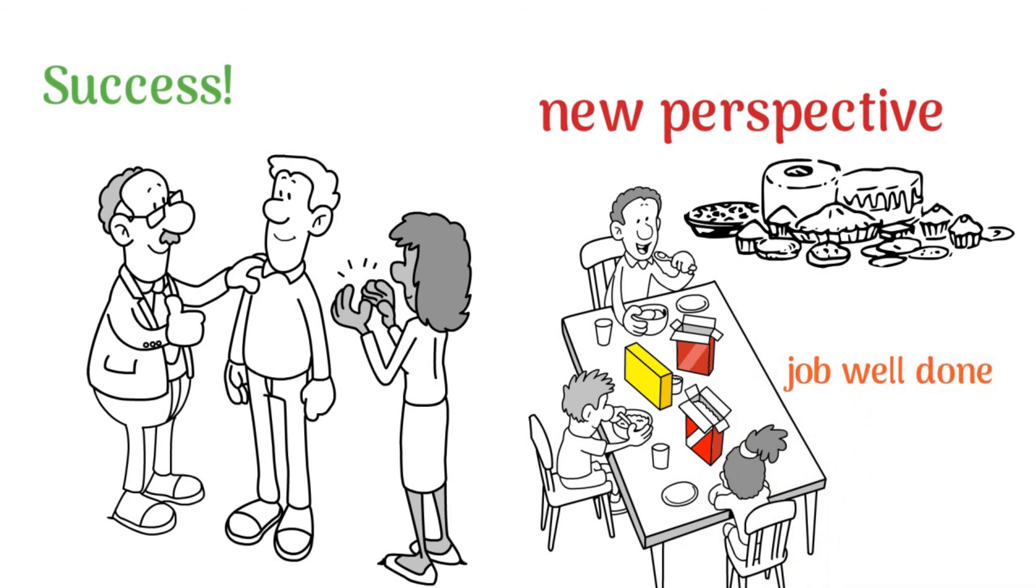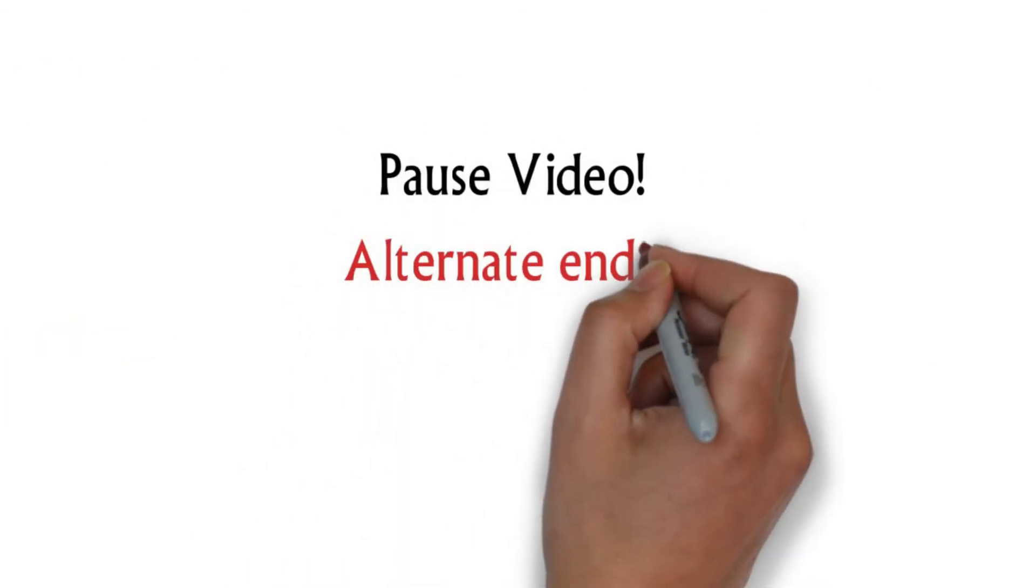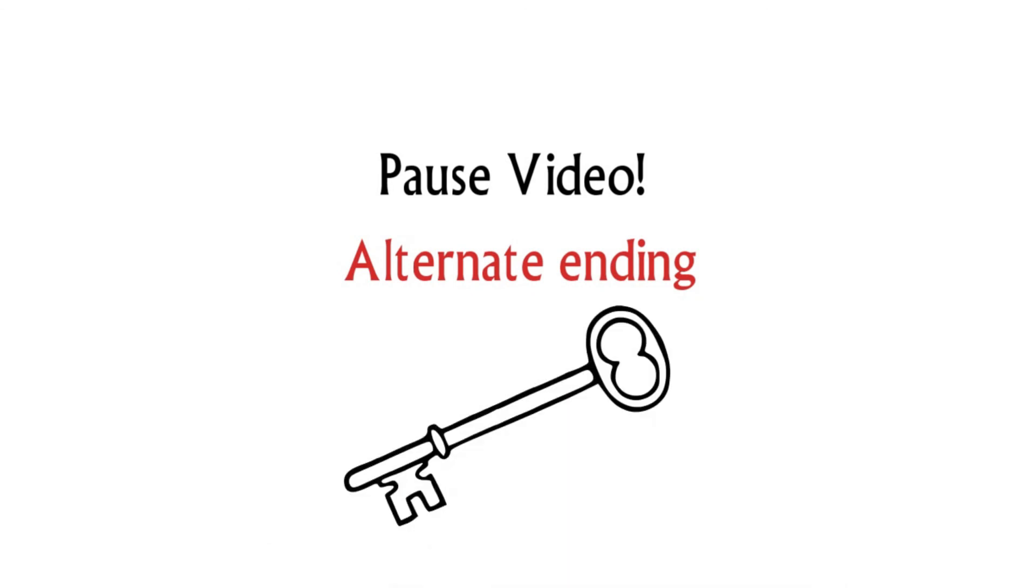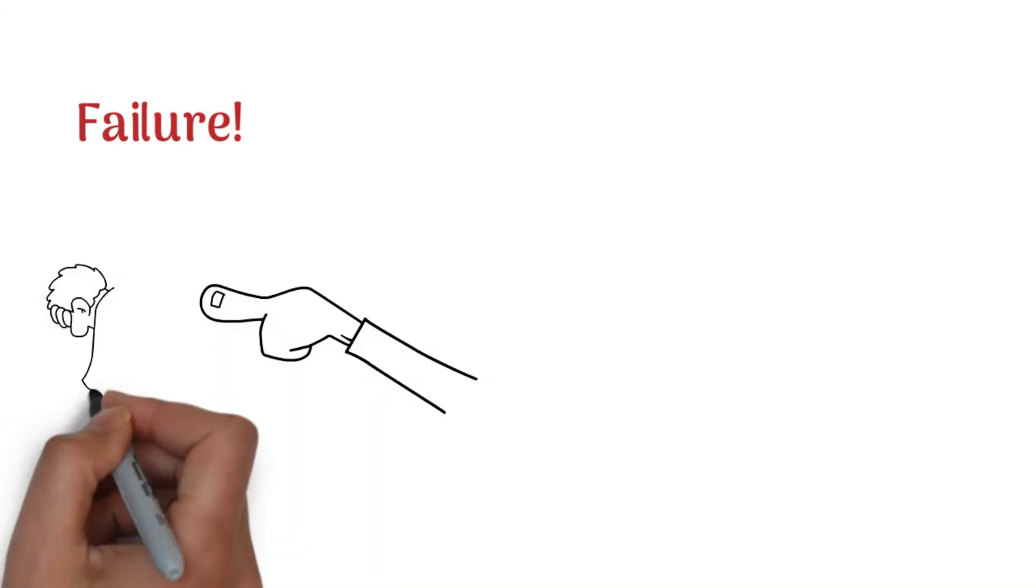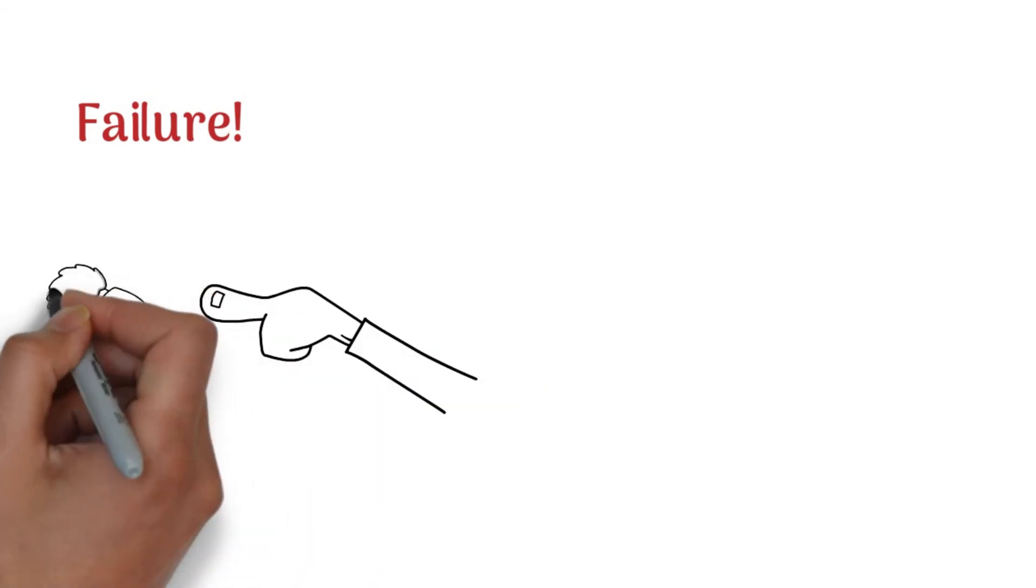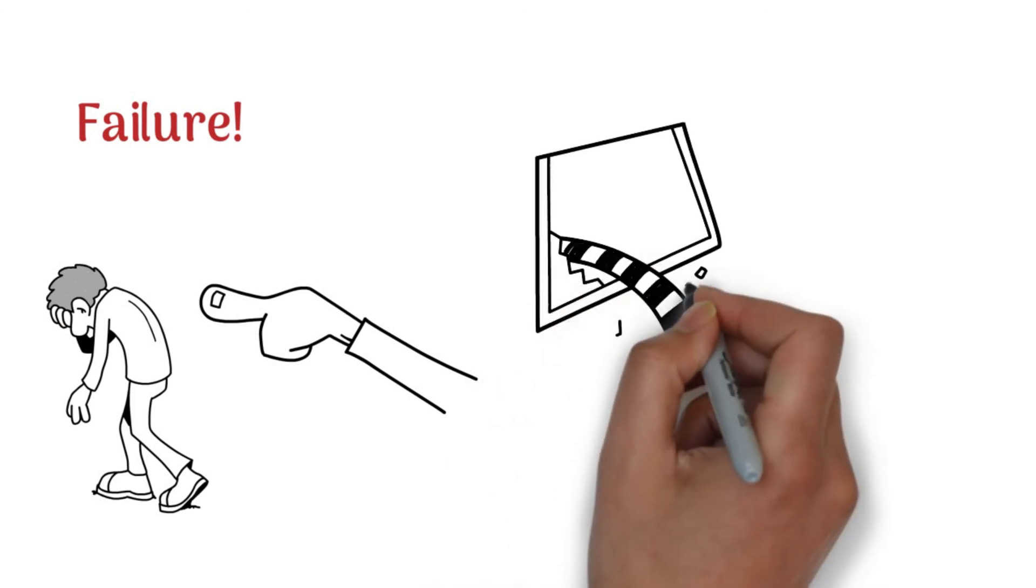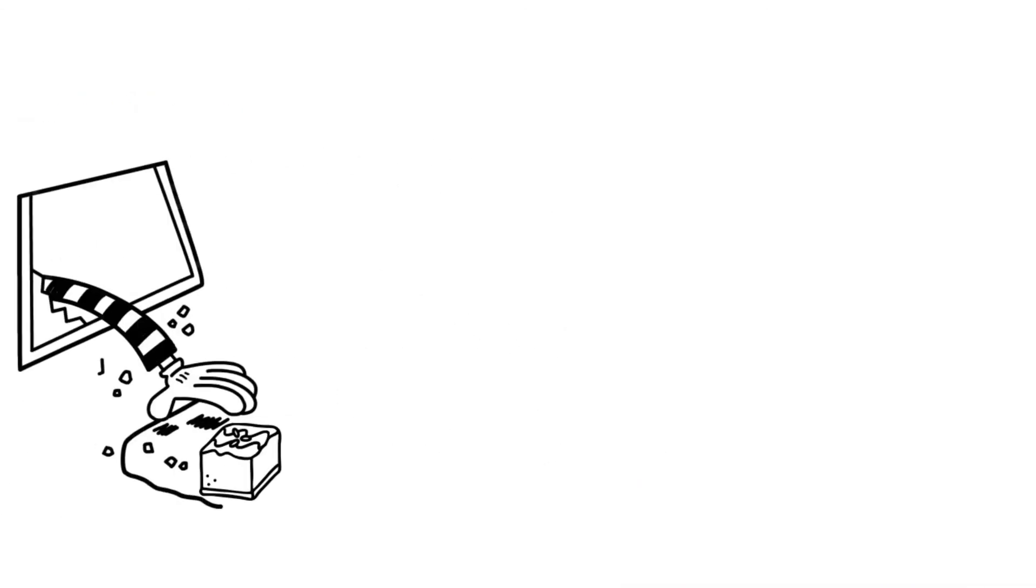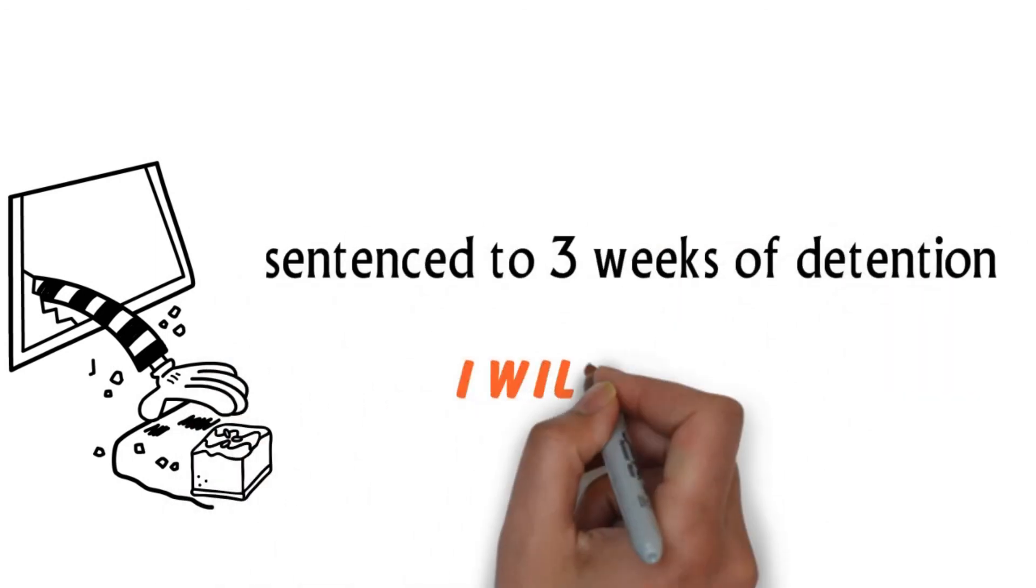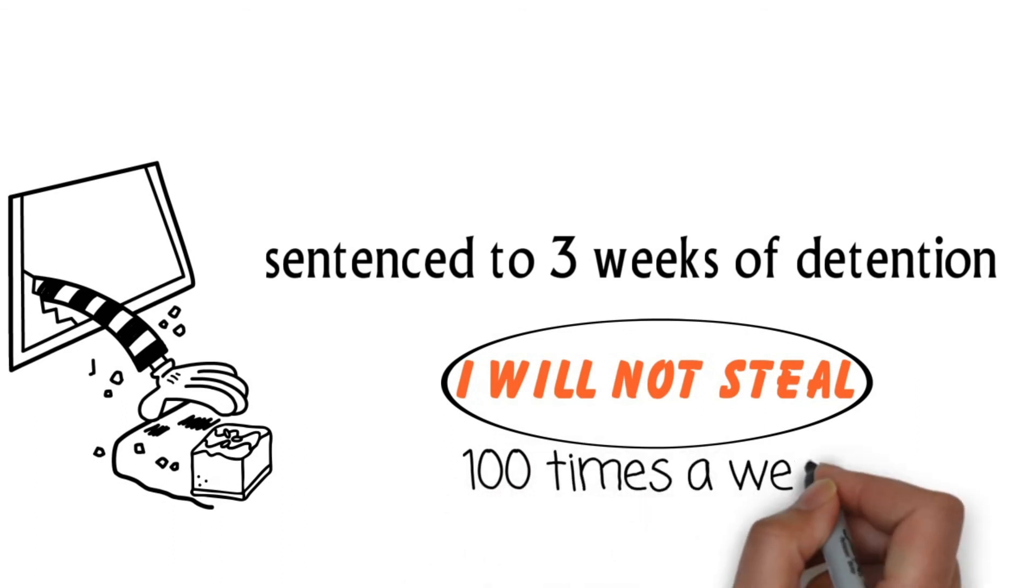Failure. Unfortunately detective, you were unable to gather enough evidence to clear your name. We're sorry that it's come to this. You were framed for a crime you didn't commit and the thief now is able to continue their crimes. You were sentenced to three weeks of detention and have to write 'I will not steal' 100 times a week.